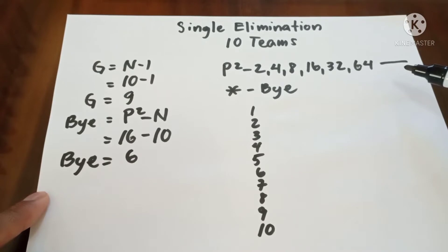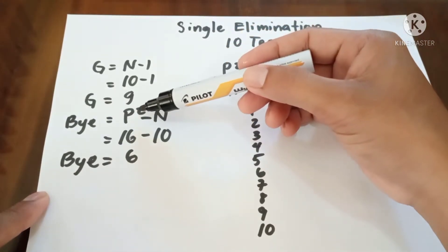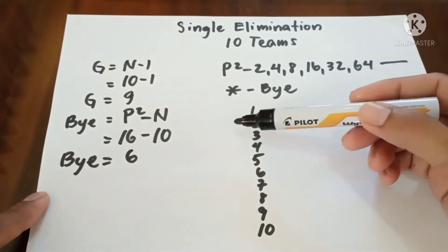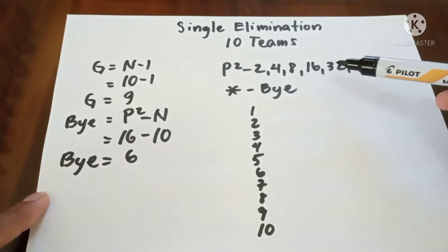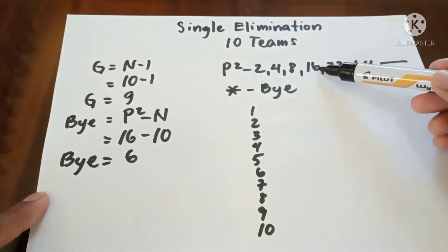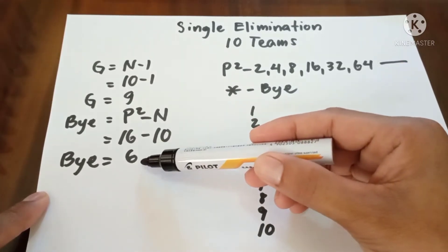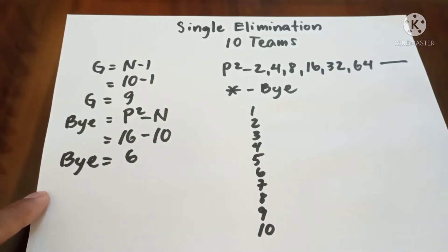To get the number of byes, we use: byes equals the next higher power of 2 minus n. The next higher power of 2 above 10 is 16, so 16 minus 10 equals 6. We have 6 byes.